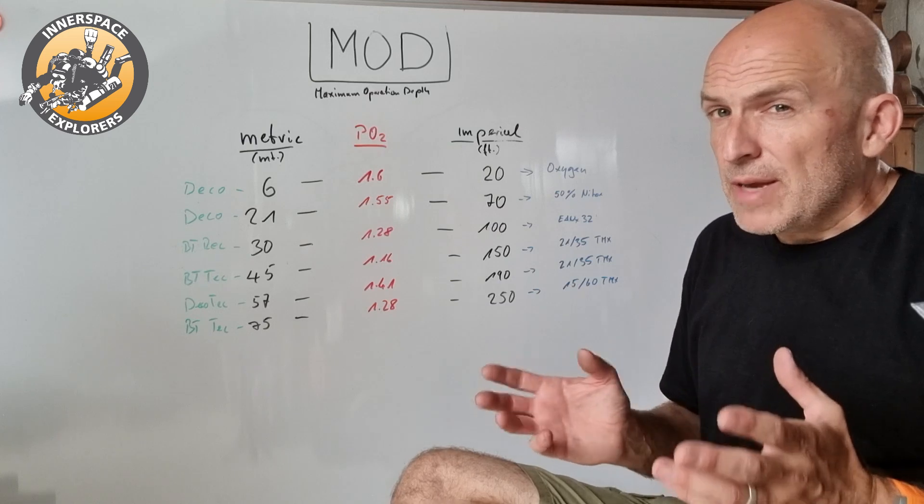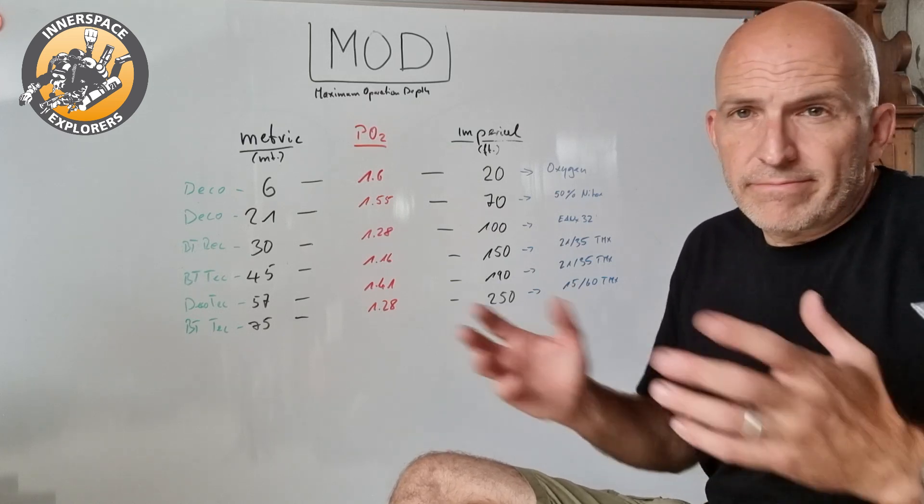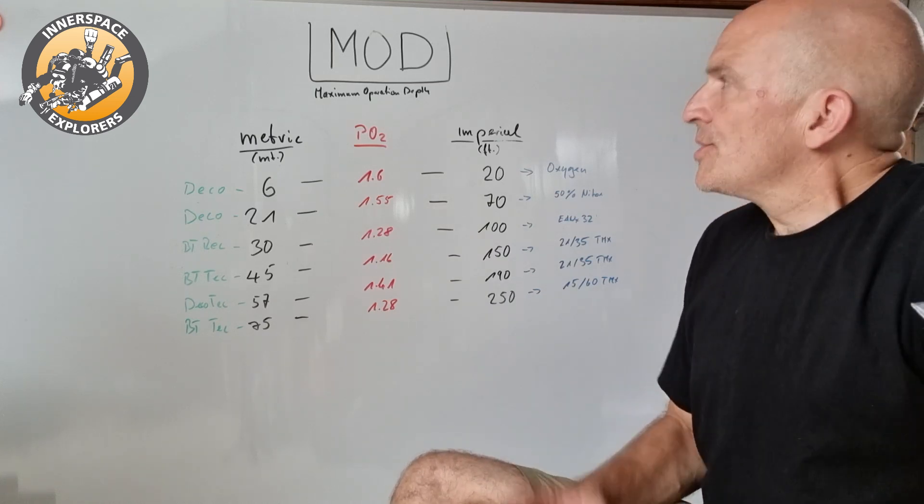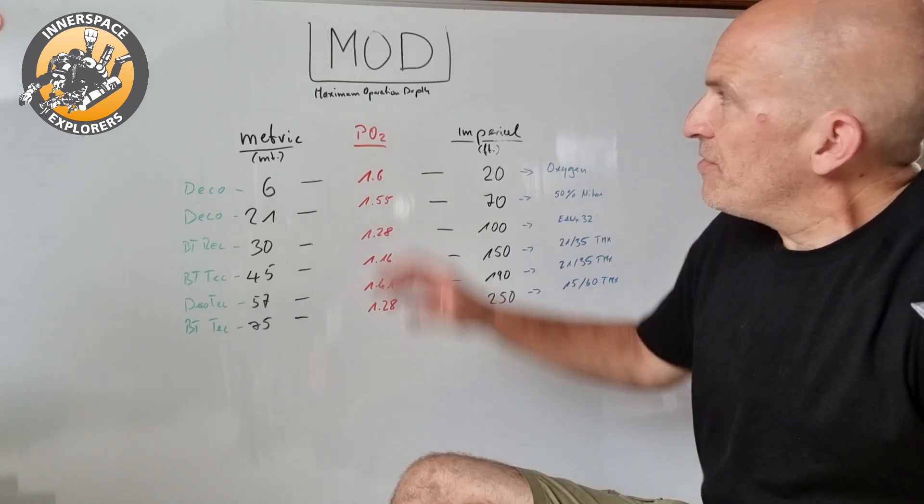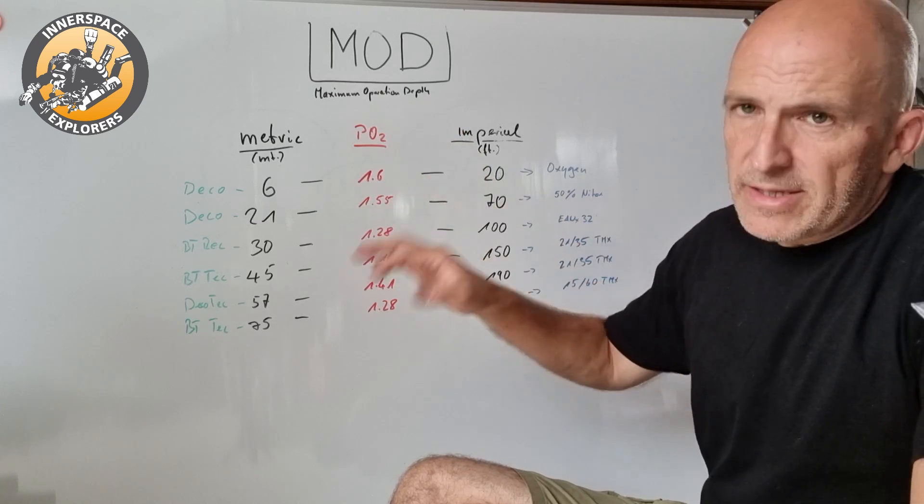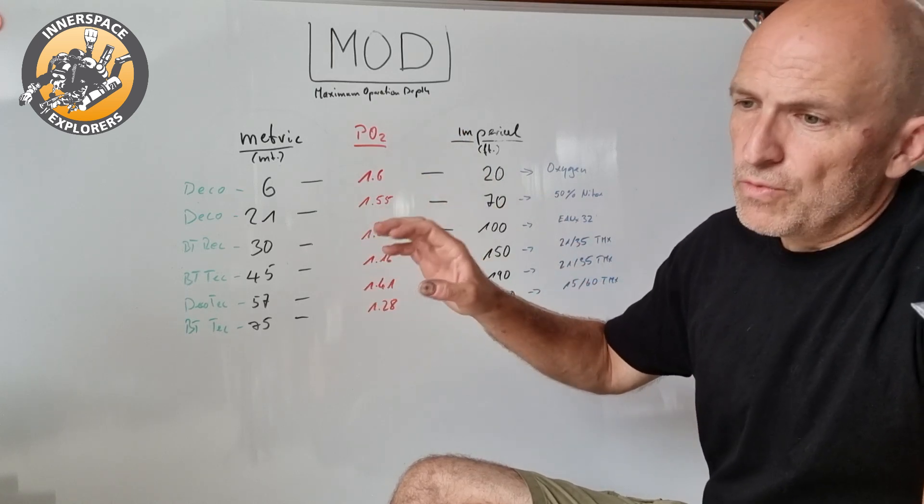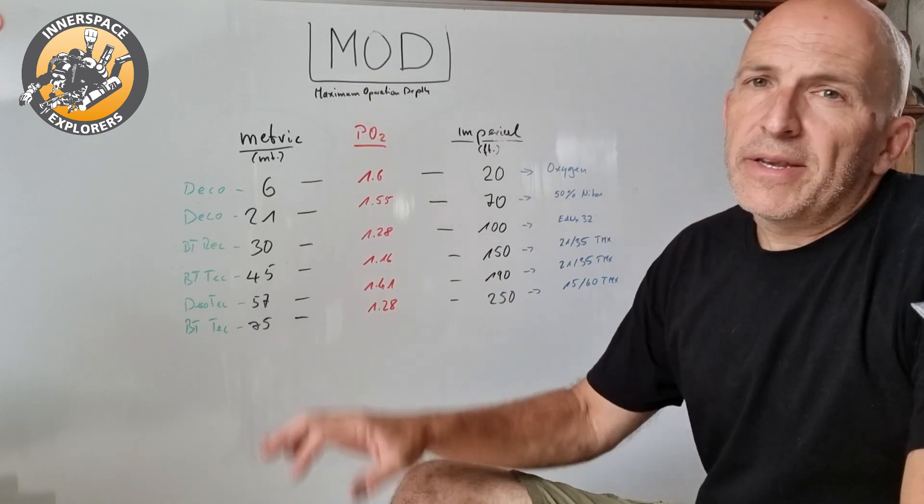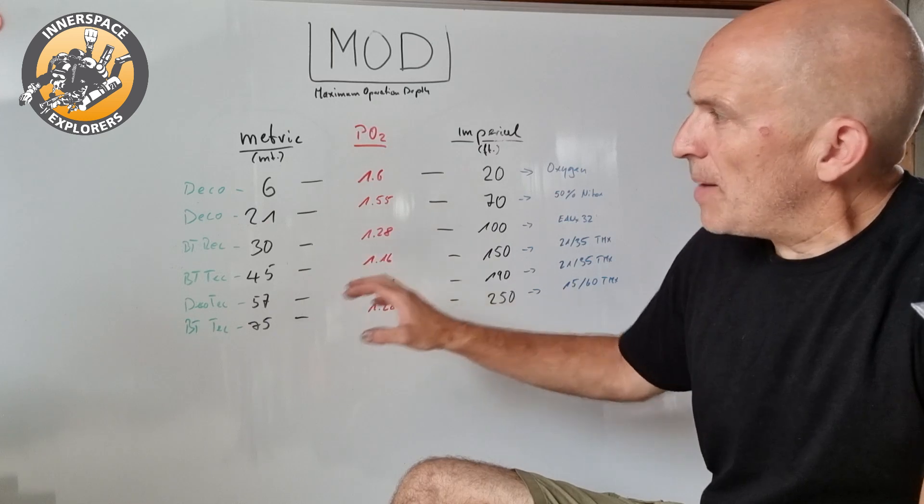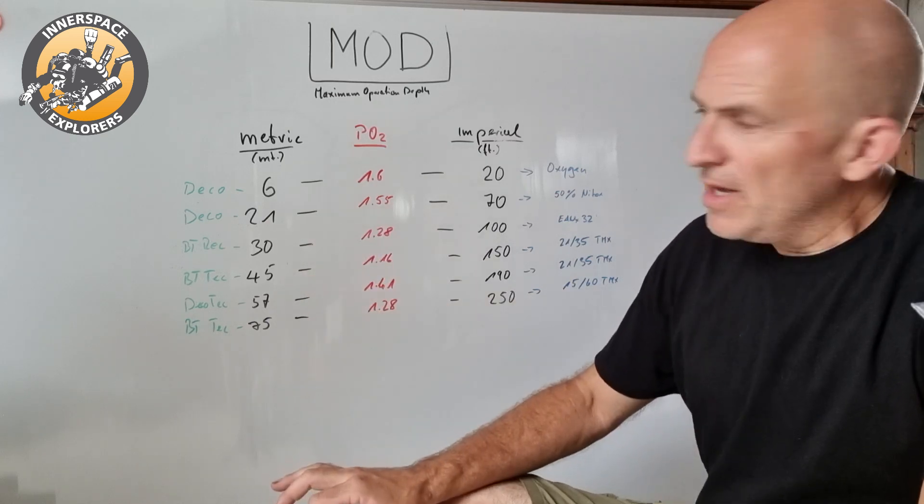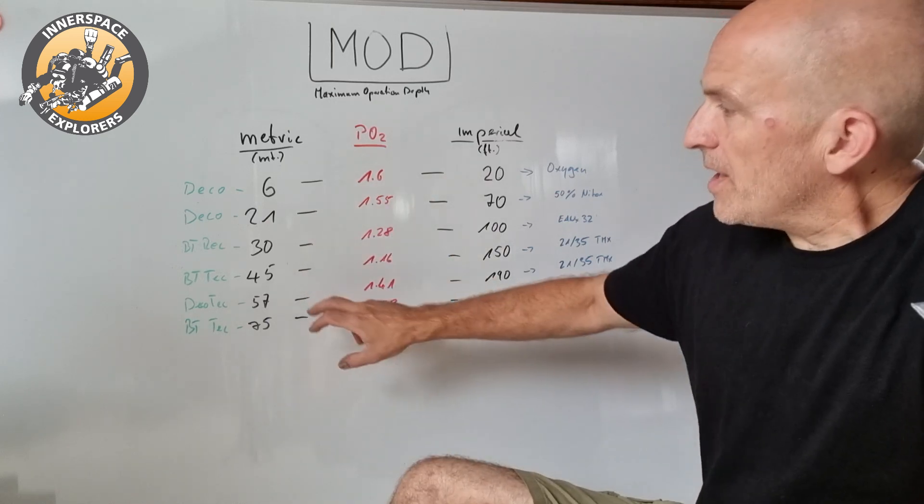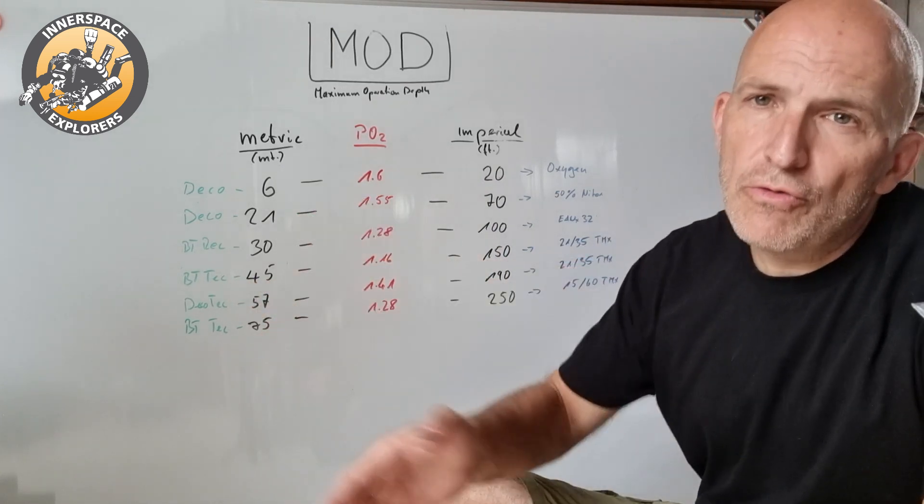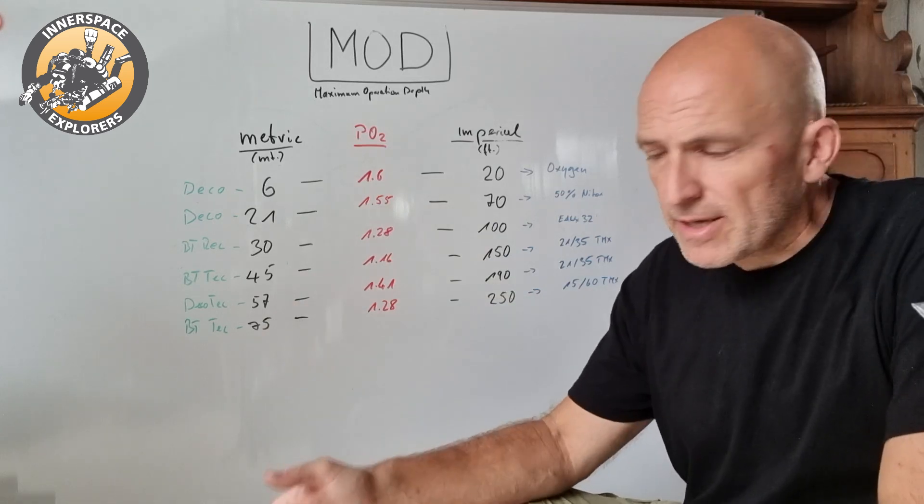When you read MOD, don't get the wrong impression that this always defines that gas with 1.6 PO2. That's completely wrong and that's what I hear a lot. People think, is it based on PO2, is it based on narcotic depth? It is not. It really defines the target depth to which I can go with that gas if it is my bottom gas, and it is defined as the switch depth if it is my decompression gas.